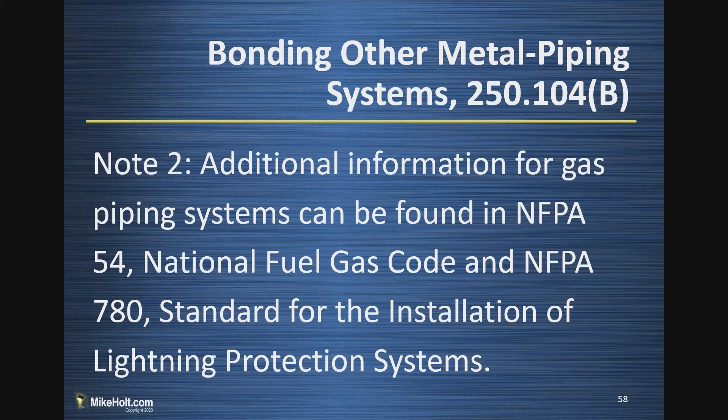There's an informational note that additional information for gas pipe systems can be found in NFPA 54, the National Fuel Code, and NFPA 780 for the installation of lightning protection systems. NFPA 54 covers mechanical contractors doing mechanical work. NFPA 780 is the lightning protection standard, and NFPA 780 requires bonding of things that are within six feet.